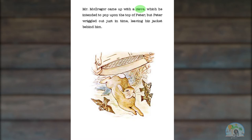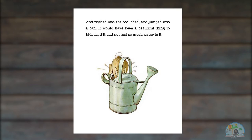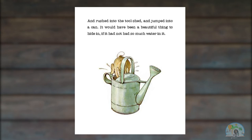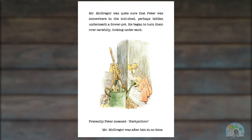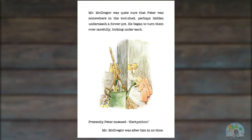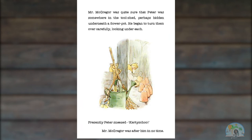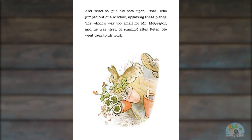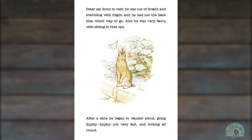And rushed into the tool shed and jumped into a can. It would have been a beautiful thing to hide in if it had not had so much water in it. Mr. McGregor was quite sure that Peter was somewhere in the tool shed, perhaps hidden underneath a flower pot. He began to turn them over carefully, looking under each. Presently, Peter sneezed — ka-choo! Mr. McGregor was after him in no time and tried to put his foot upon Peter, who jumped out of a window, upsetting three plants. The window was too small for Mr. McGregor and he was tired of running after Peter. He went back to his work. Peter sat down to rest. He was out of breath and trembling with fright. And he had not the least idea which way to go. Also, he was very damp with sitting in that can.